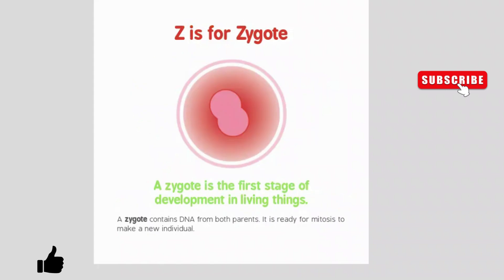Z is for zygote. A zygote is the first stage of development in living things. A zygote contains DNA from both parents. It is ready for mitosis to make a new individual.